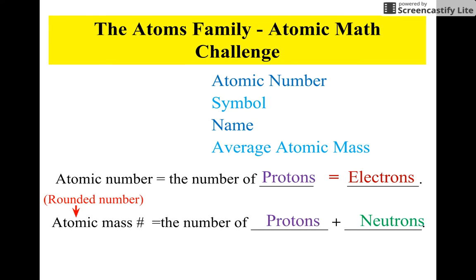So, let's just do a quick review over here. The atomic number is the number of protons, also the number of electrons, because the number of electrons will be the same number of protons if an element is neutral.